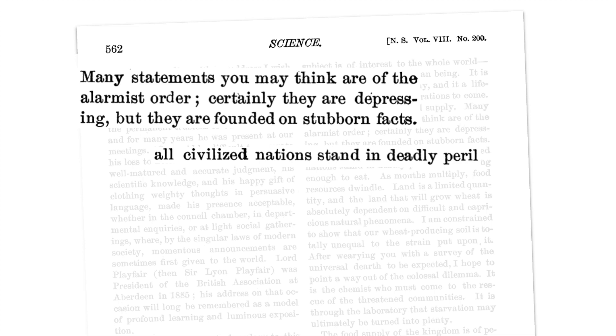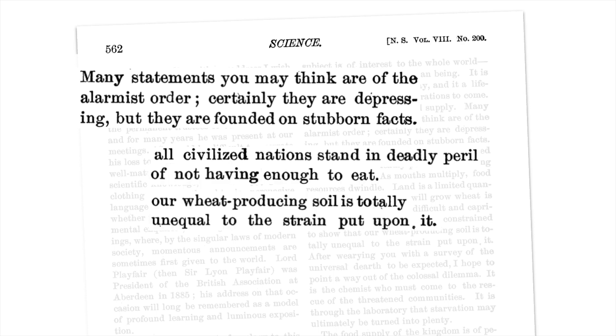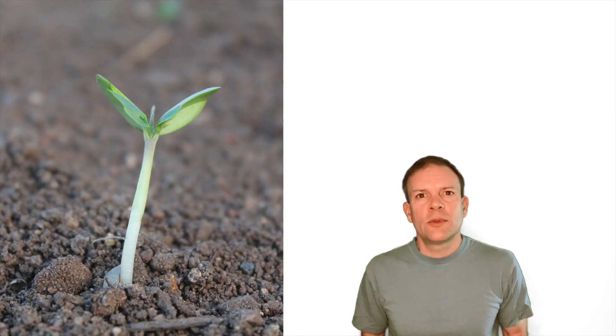While this might sound like it was written today, believe it or not, this paper is actually written in 1898. So what were they so worried about back then? Well, it turns out they were worried about not having enough to eat. Our wheat producing soil is totally unequal to the strain put upon it.